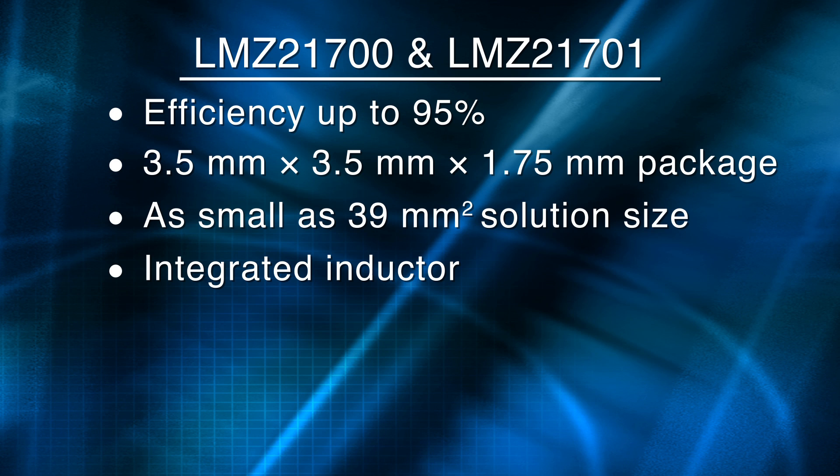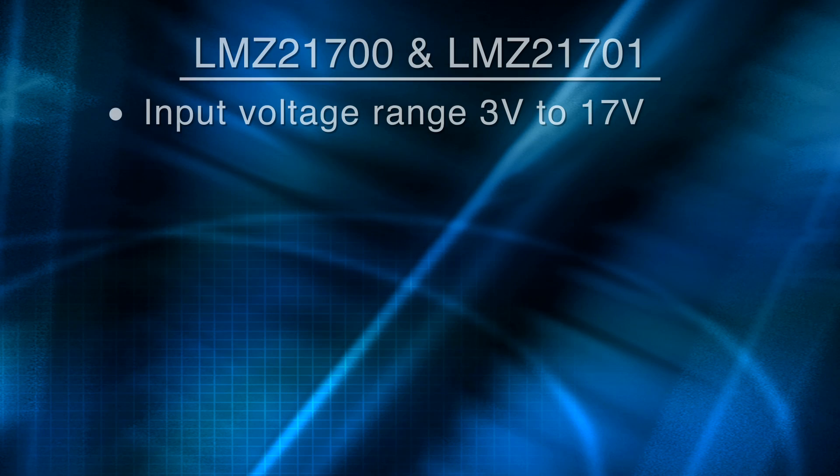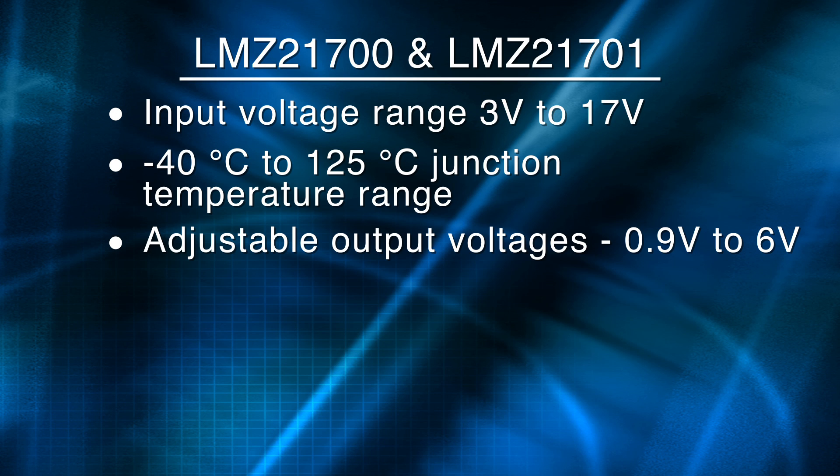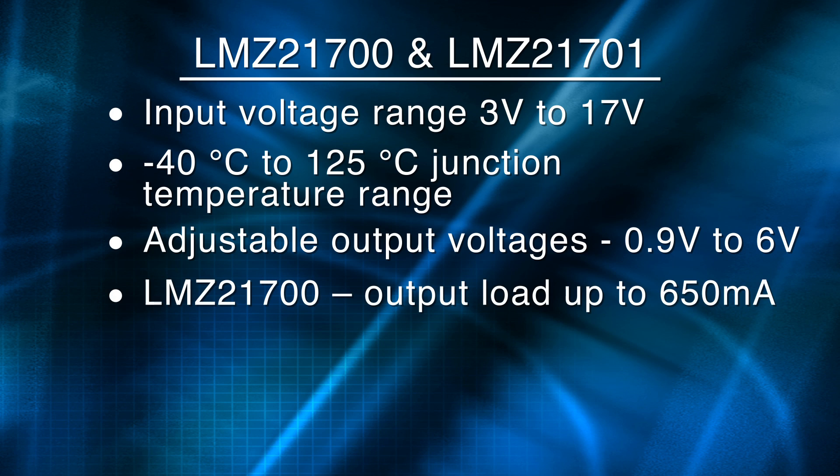Both of these products feature an input voltage range of 3 volts to 17 volts, an integrated inductor, a very small package and solution size, and adjustable output voltages from 0.9 to 6 volts. The LMZ21700 is capable of driving an output load up to 650 milliamps and with the 21701 you can drive a load up to 1 amp.